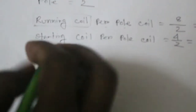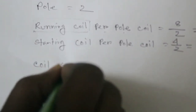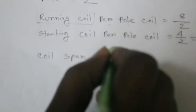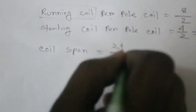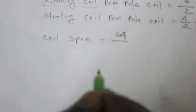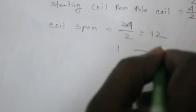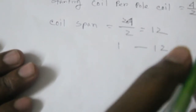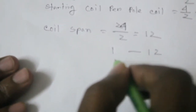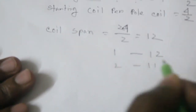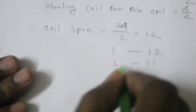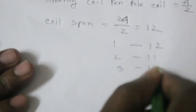Now we need the coil span. Coil span is total slots divided by pole, which means 24 divided by 2 equals 12. So the first coil span is 1 to 12 — this is the long coil. The second coil is 2 to 11, the third coil is 3 to 10, and the fourth coil is 4 to 9.